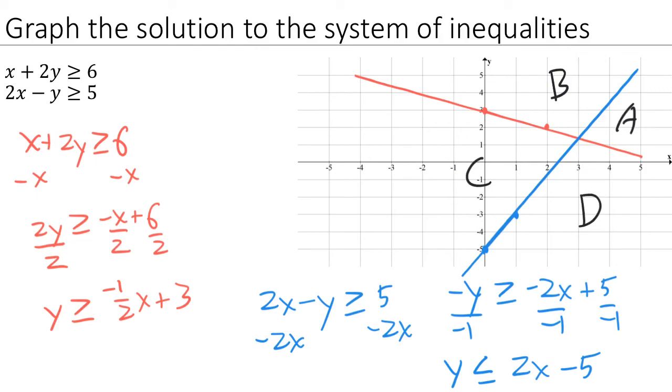The solution to our system is going to be one of these regions. To determine which one, we can look at the inequalities one at a time. Let's start with our red inequality here. If we were solving that by itself, the greater than symbol means that we would want to shade above the red line. Well, that would be regions A and B.